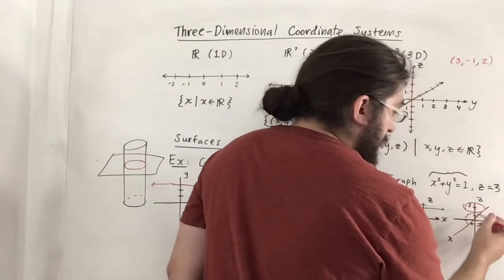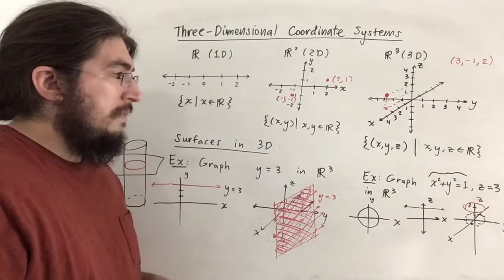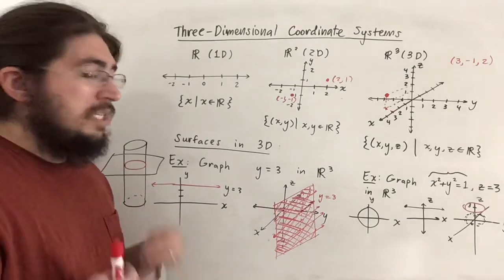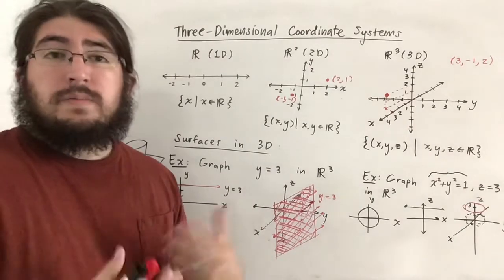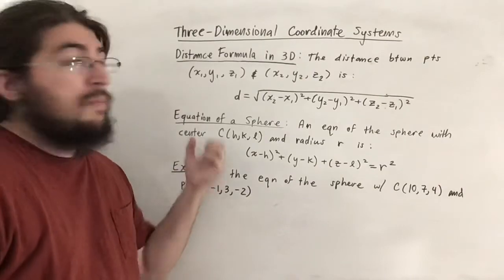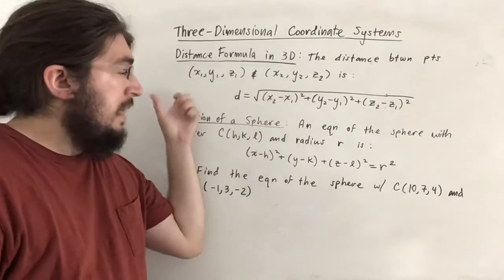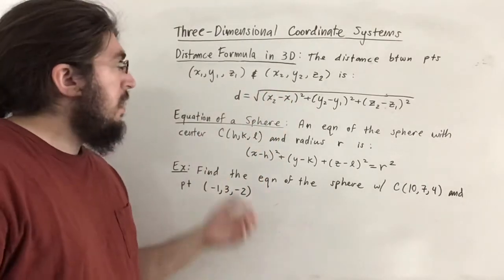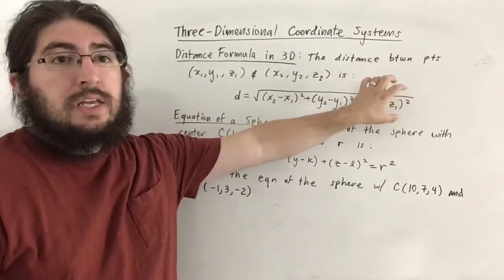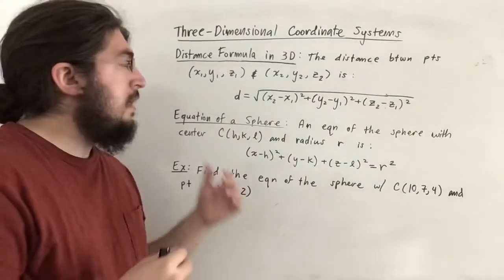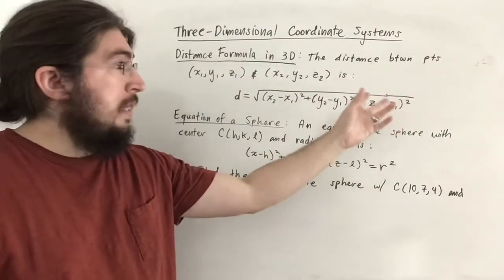So now I'm going to discuss distances and then look at some special equations in three dimensions. The distance formula in three dimensions gives the distance between points (x₁, y₁, z₁) and (x₂, y₂, z₂). It looks very familiar to the distance formula in two dimensions — in fact if you cover the z-terms you get the exact formula for distance in two dimensions. In three dimensions it's literally just an extension by adding the square of the difference between the z-values.